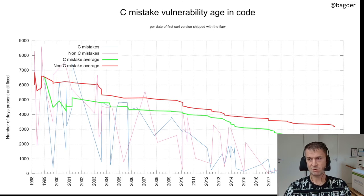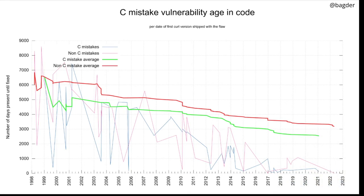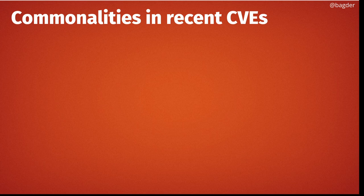Another graph shows the average time a CVE flaw was present in the code base, broken down by C mistake versus non-C mistake. It mostly shows that C mistakes are found faster than non-C mistakes — probably because you can find C mistakes better with tools, while non-C mistakes are harder to detect with tooling.